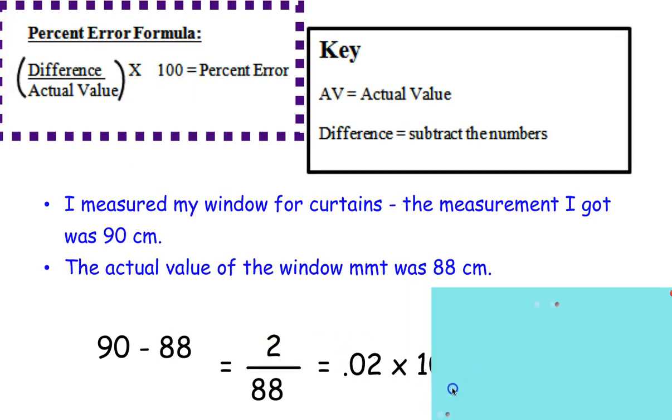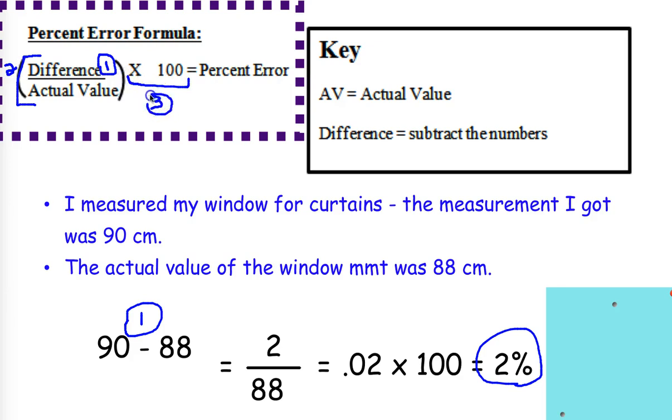So in this case, I round to the nearest hundredth which is 0.02, and then I have to go to my third step and multiply the whole thing by 100. My answer will then be 2. So my overall percent error for this equation is 2%. Here you can see all the steps laid out. Step 1, 90 minus 88 where I take the difference. Step 2, where I divide the answer by the actual value. And step 3, when I multiply it by 100 to get my final answer, which is my percent error.